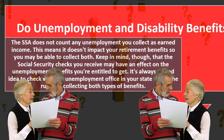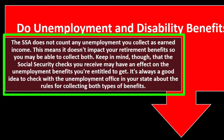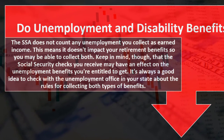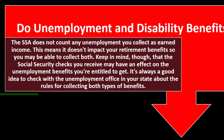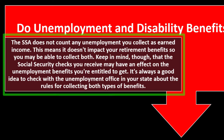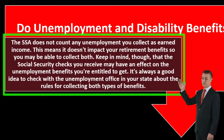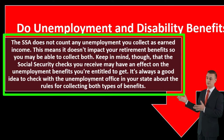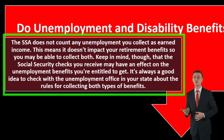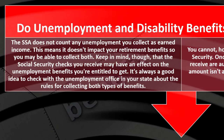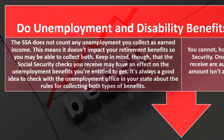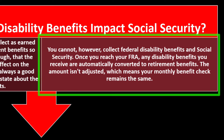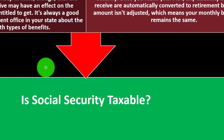Because the SSA does not count unemployment as earned income, it doesn't impact your retirement benefits, so you may be able to collect both. However, Social Security checks you receive may affect the unemployment benefits you're entitled to, so it's always a good idea to check with the unemployment office in your state. You cannot collect federal disability benefits and Social Security once you reach your FRA — any disability benefits are automatically converted to retirement benefits at the same amount.